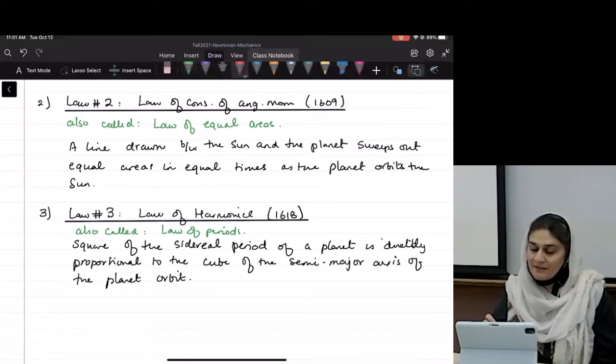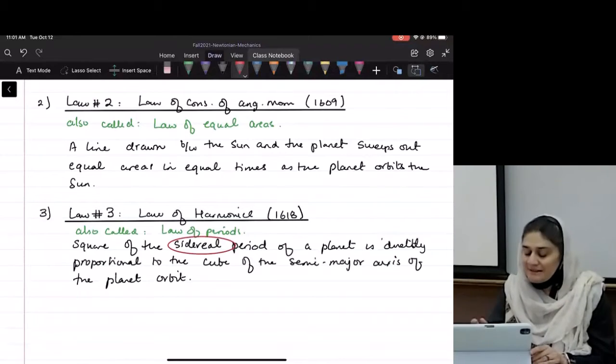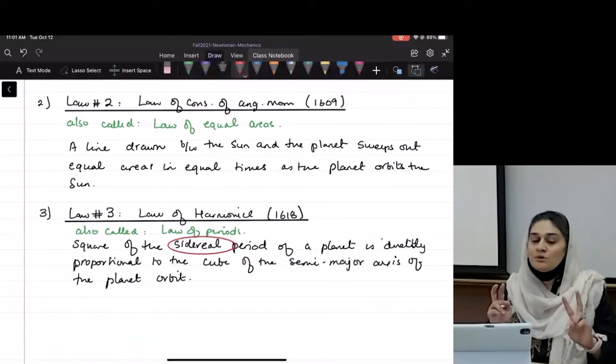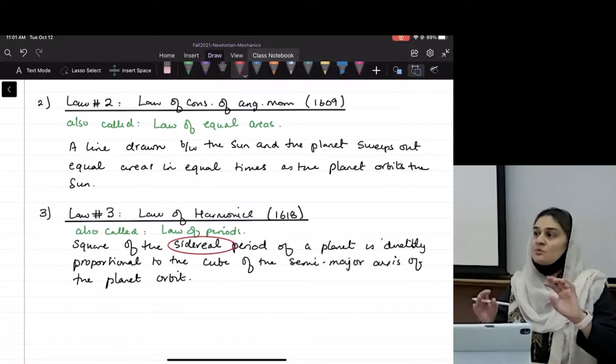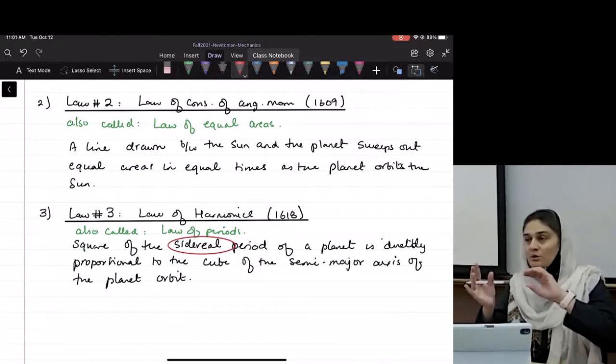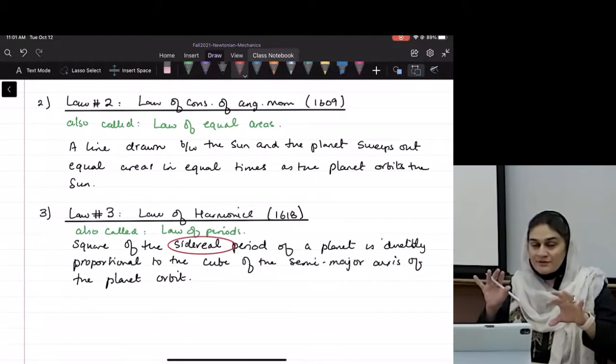Now, there is a word in here that I have used. Sidereal. There are two different kinds of motions when planets or moons go around other things.